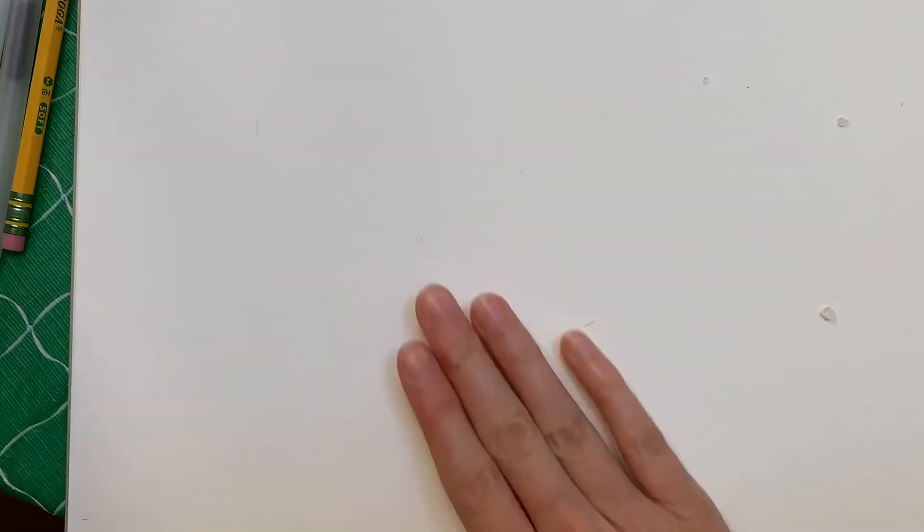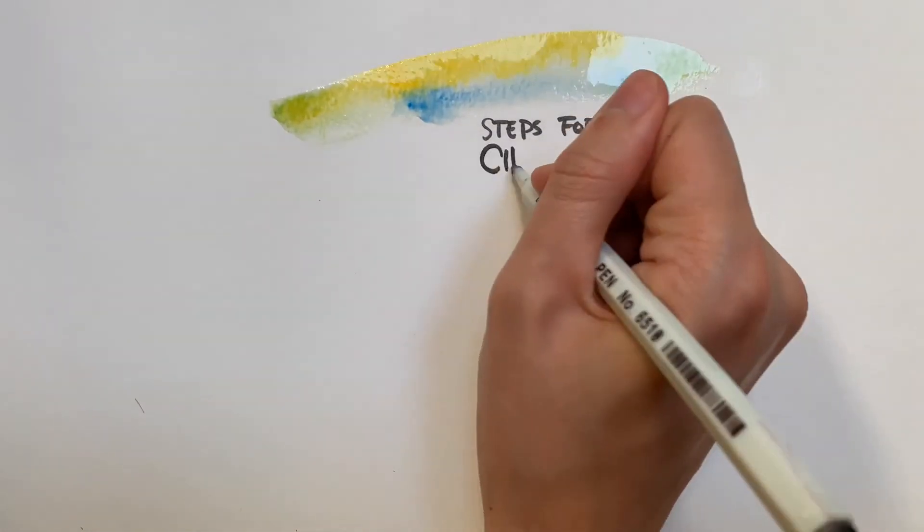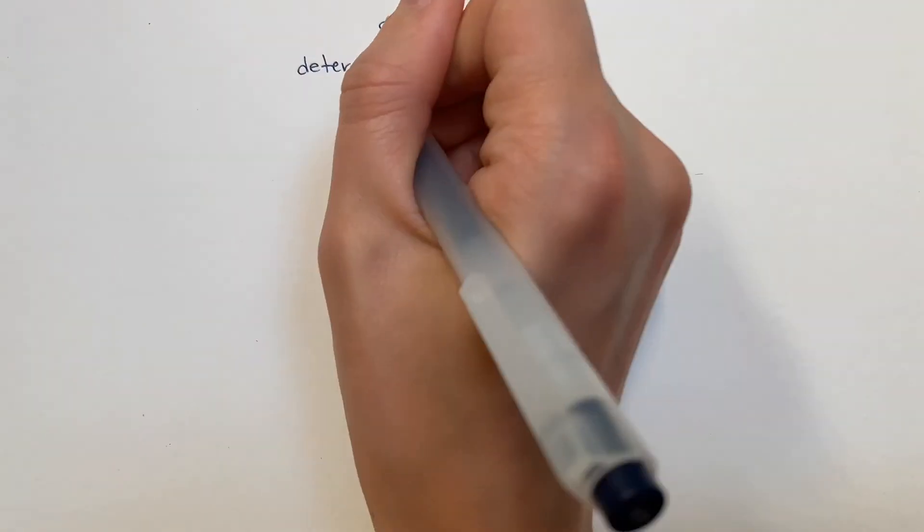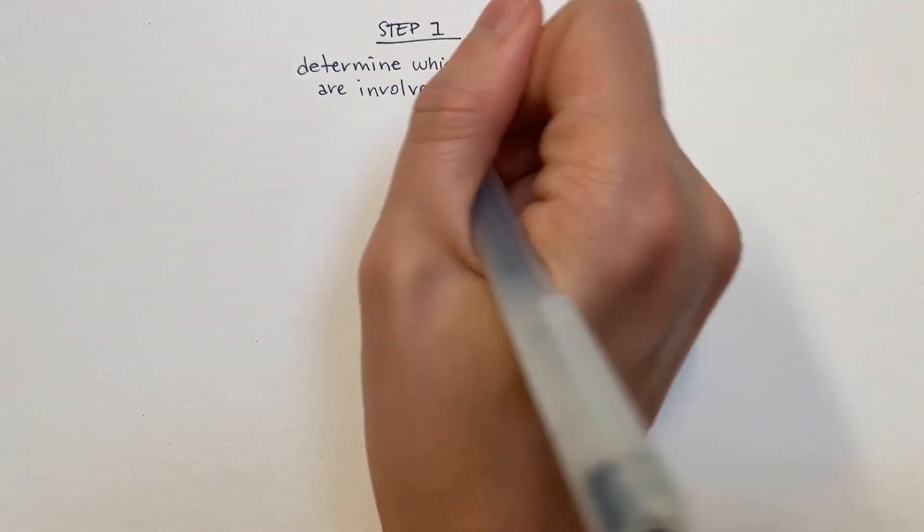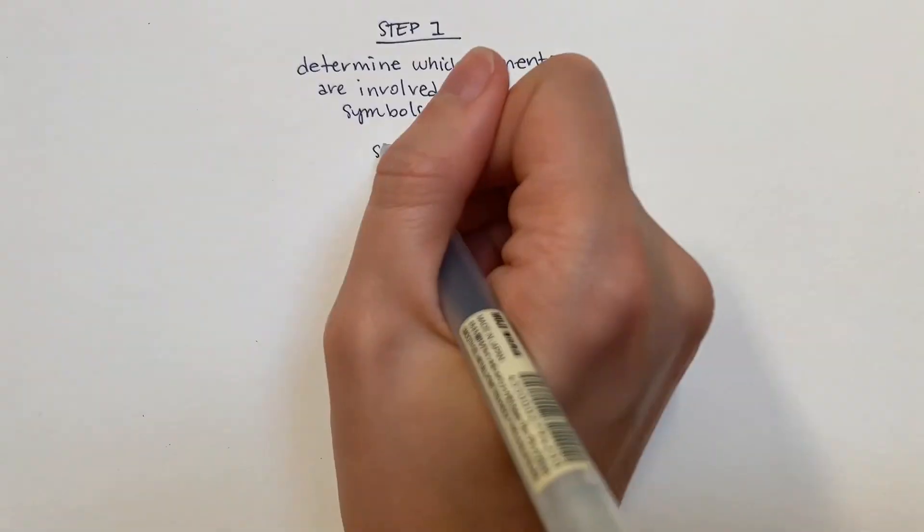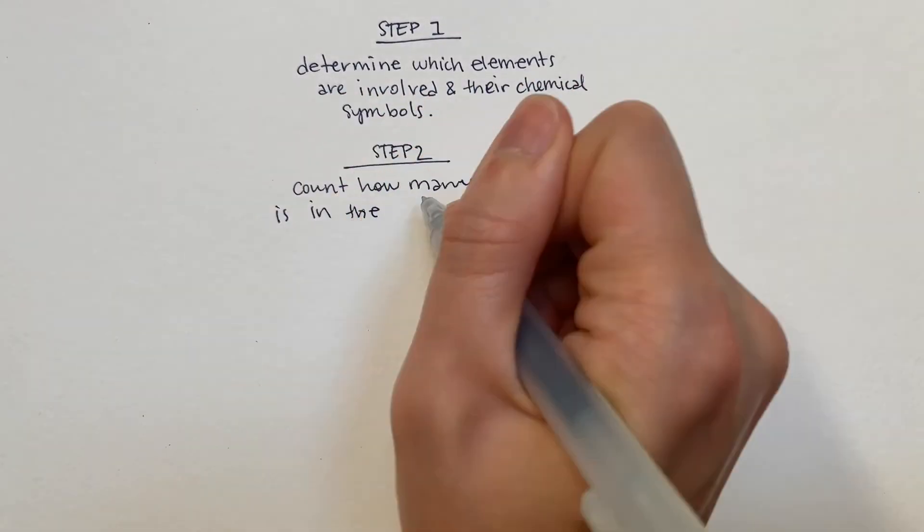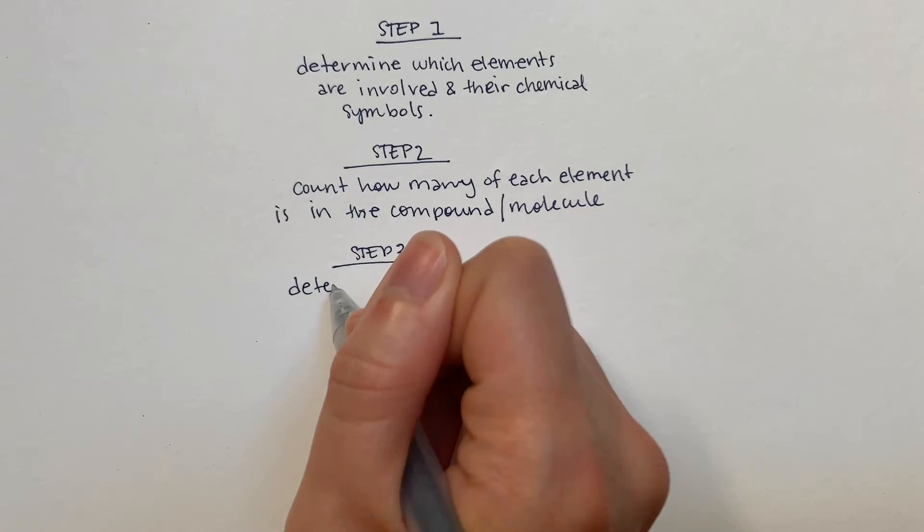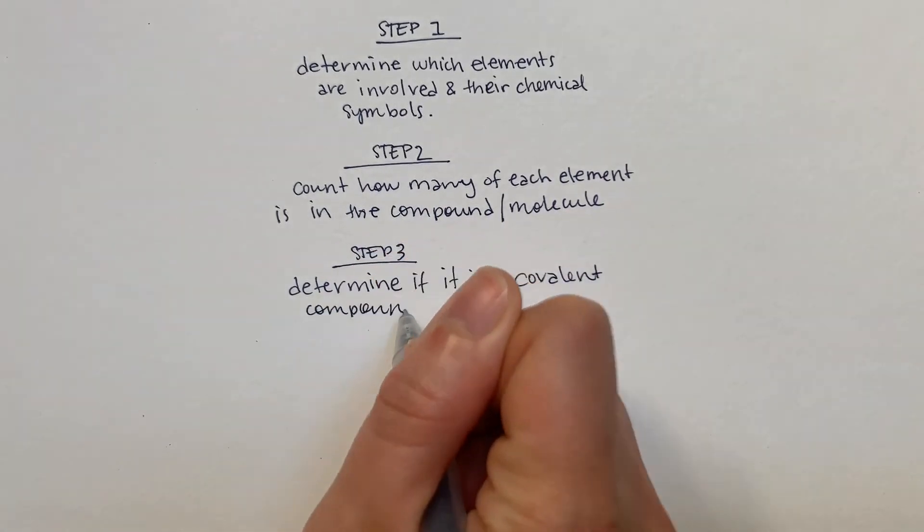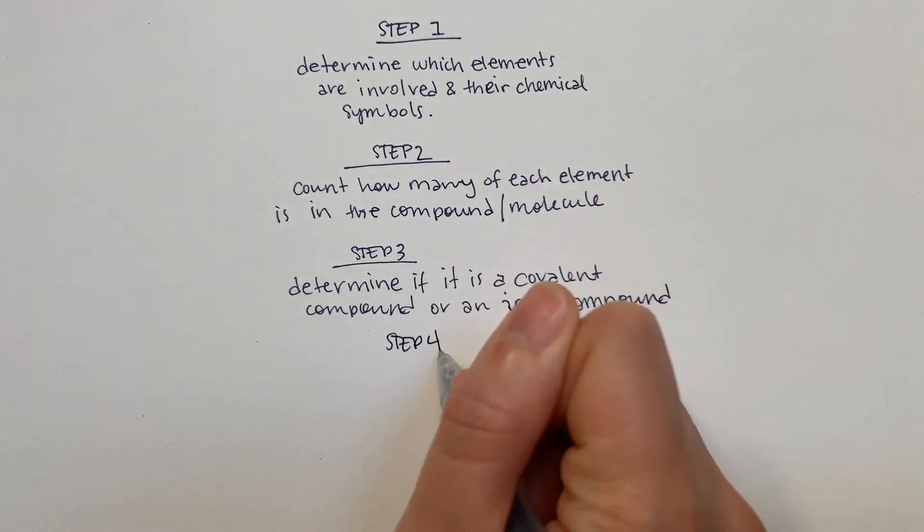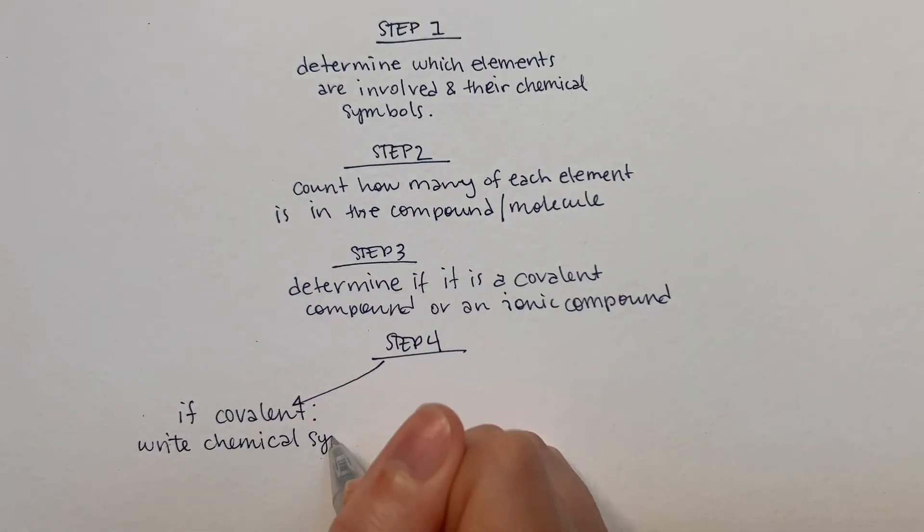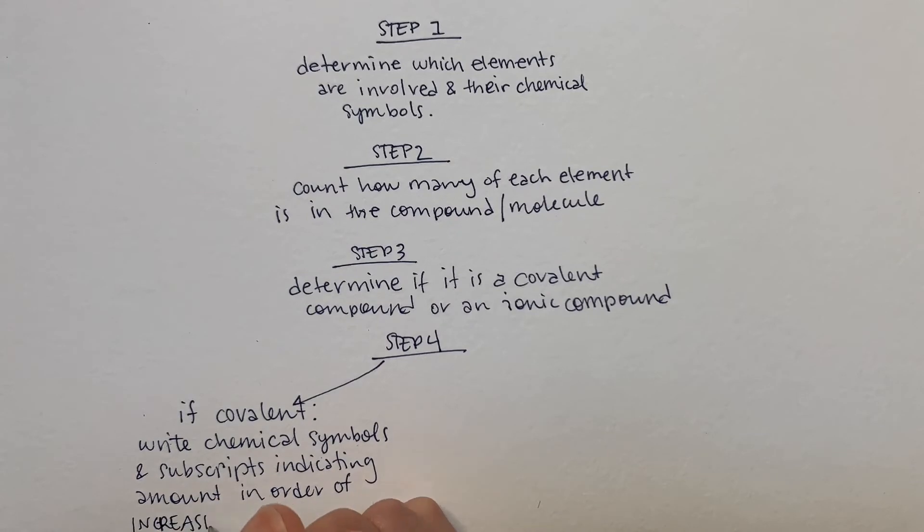We just went over a lot, so let's simplify this into some basic steps for writing a chemical formula. Step 1: Determine which elements are involved and their chemical symbols. Step 2: Count how many of each element is in that compound or molecule. Step 3: Determine if it is a covalent compound or an ionic compound. Step 4: If covalent, write the chemical symbols and the amount in the order of increasing electronegativity.